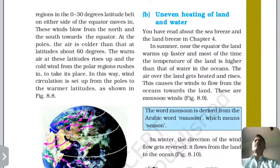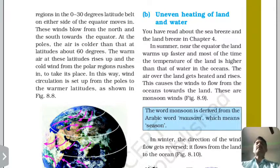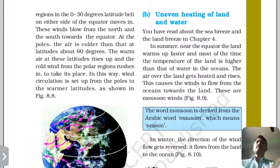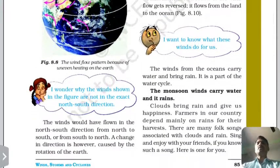Uneven heating of land and water also creates wind currents. Land heats up faster than water, creating low pressure over land and high pressure over water. This causes wind to move from sea to land, known as a sea breeze, and from land to sea as a land breeze.